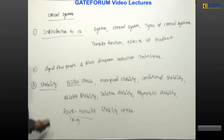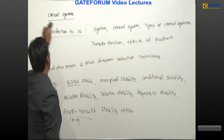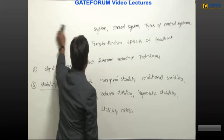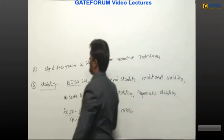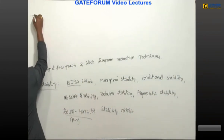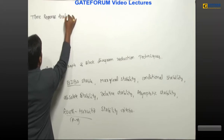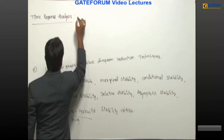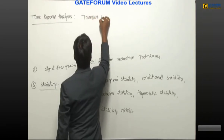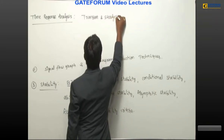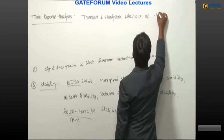These are the first three topics: introduction to control system, signal flow graph, and stability. The fourth topic is time response analysis. In this we need to discuss transients and steady-state behavior of first and second order systems.